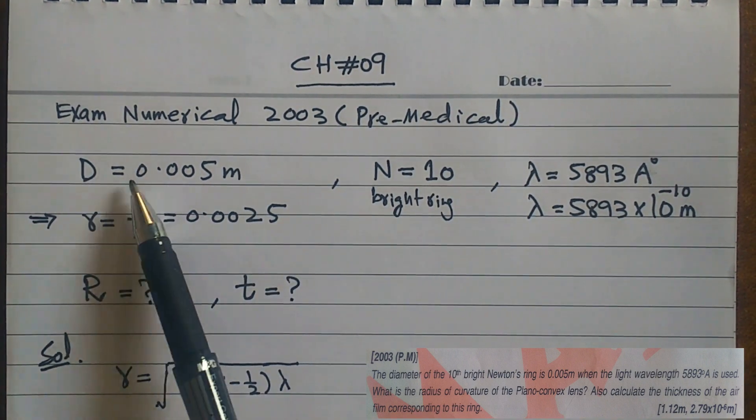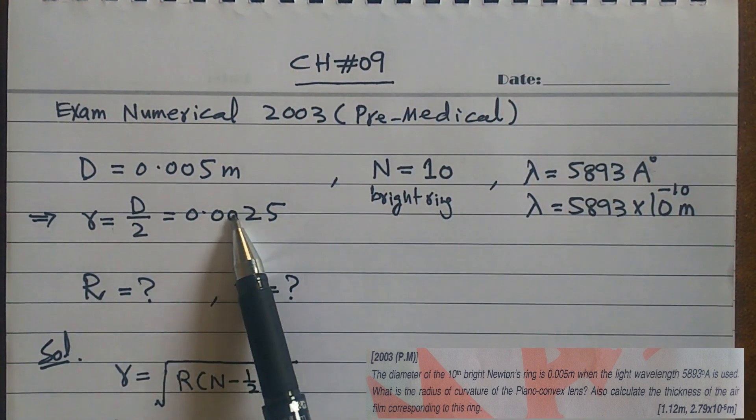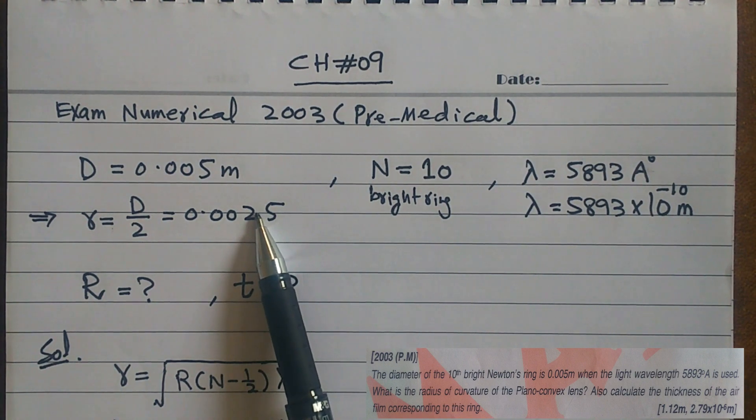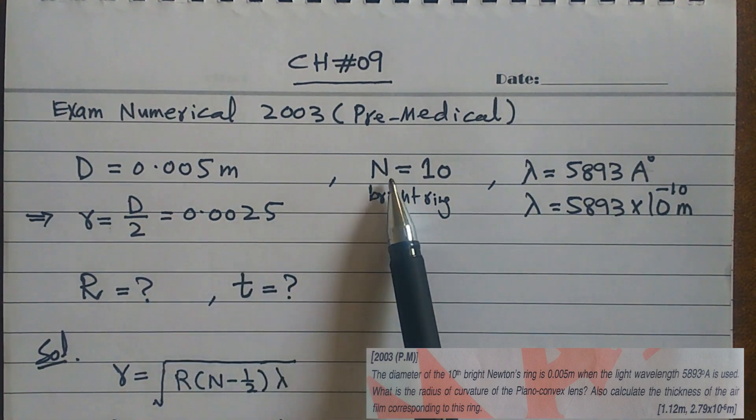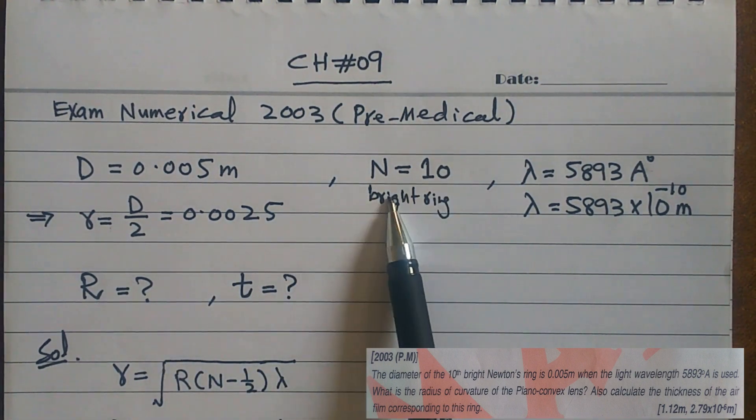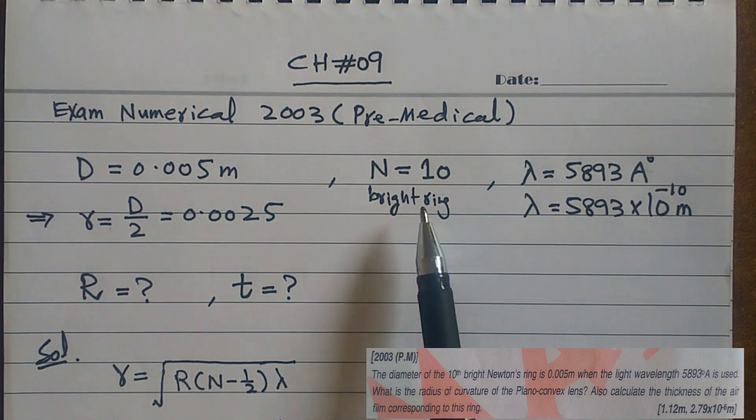We need radius, so we divide the diameter and it becomes 0.0025. The diameter of the 10th bright ring - the number of ring is 10 and it is a bright ring. So we have to apply the formula to it.